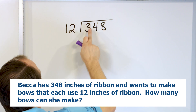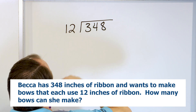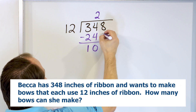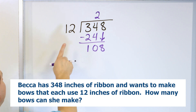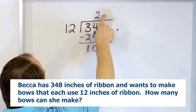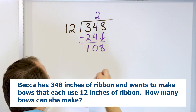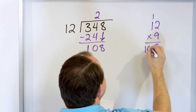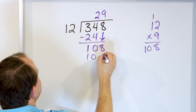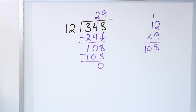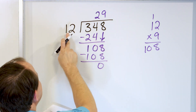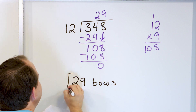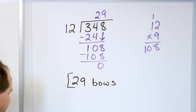I have a total of 348 inches of ribbon and I'm dividing it into segments 12 inches long. Twelve times one is 12, twelve times two is 24, twelve times three is 36 — that's too big. So it has to be 12 times two for 24. Subtract: four minus four is zero, three minus two is one. Drag the eight down. Now 12 times eight is 96, and 12 times nine — nine times two is 18, carry the one, nine times one is nine, one more is 10 — it's exactly 108. Subtract, remainder zero. So the answer is 29 bows.